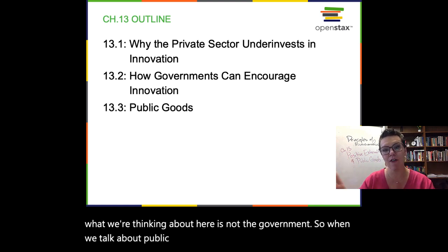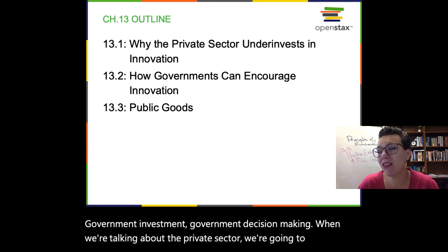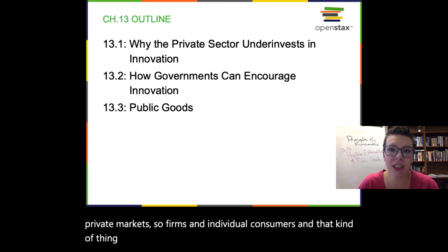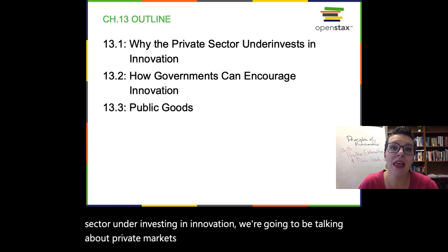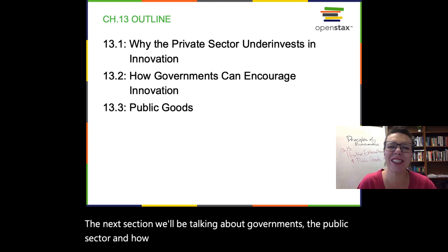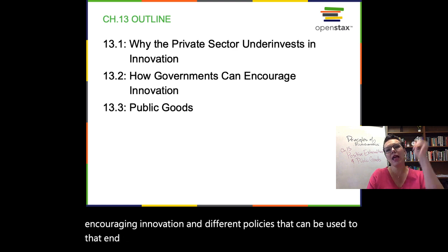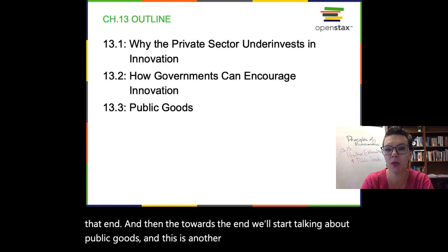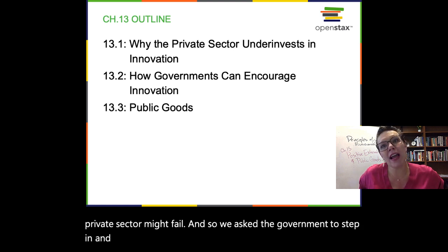When we talk about public stuff, we're talking about the government — government investment, government decision making. When we're talking about the private sector, we're talking about private markets: firms and individual consumers. That first section, when we talk about the private sector underinvesting in innovation, we're talking about private markets. The next section, we're talking about governments — the public sector — and how governments can solve this problem by encouraging innovation through different policies. Towards the end, we'll start talking about public goods, another situation where the private sector might fail and we ask the government to step in and correct this market failure.